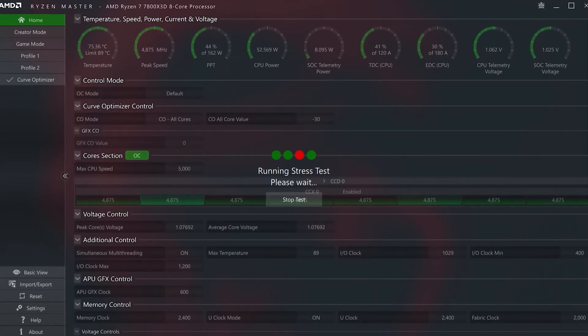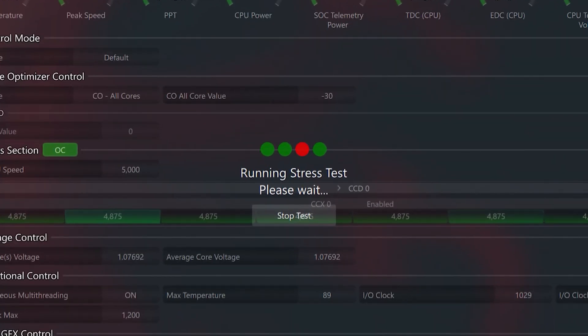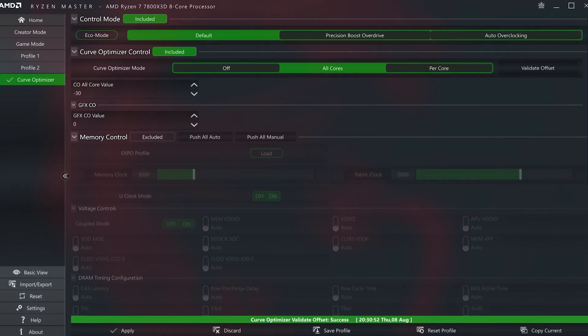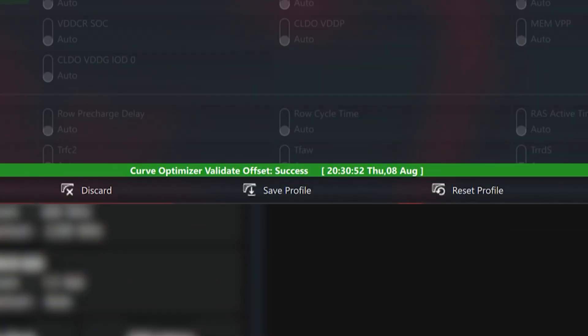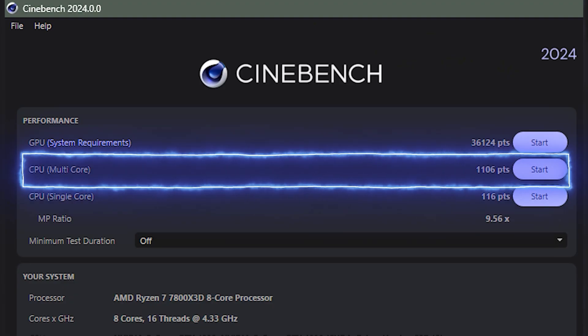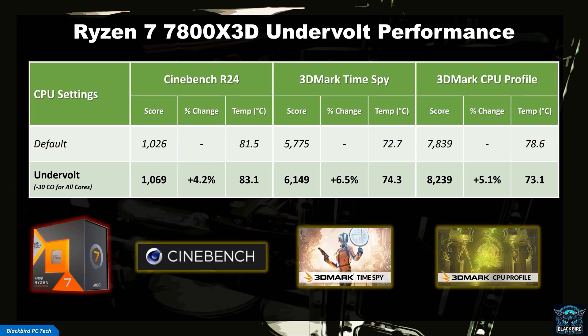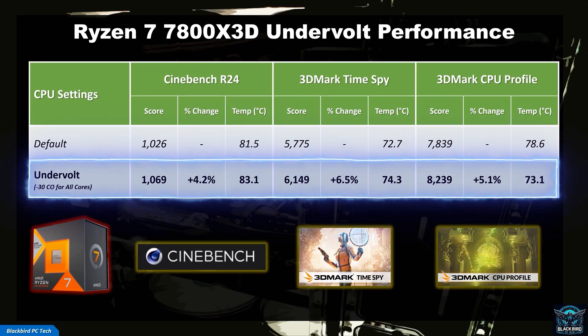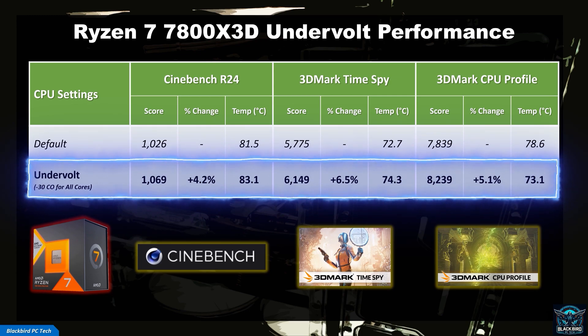Once it boots back into Windows it will automatically load Ryzen Master and run a stress test. If the test completes successfully you will see a confirmation in green at the bottom of the screen. You should then test this curve offset to make sure that your CPU is stable — for this you can simply use a Cinebench multicore test. Once you find a stable all-core curve offset, rerun the benchmarks used to baseline your CPU at default settings to see what the performance gain was. For my 7800X3D a curve offset of negative 30 on all cores resulted in a performance increase of around 5%.